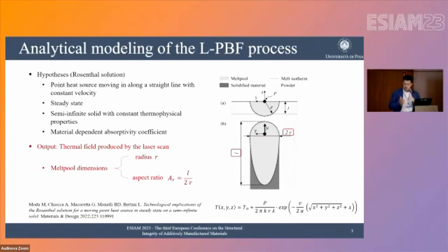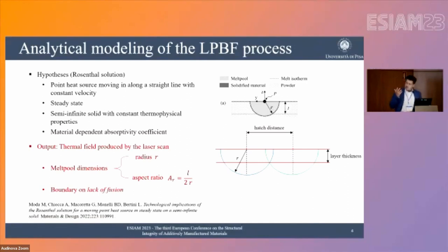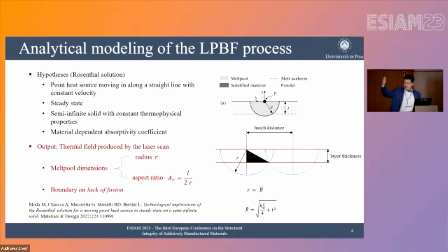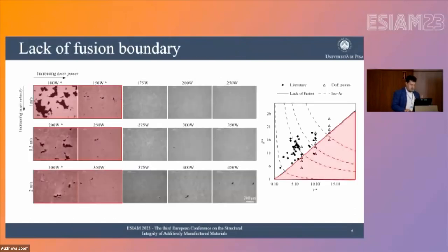Another outcome of this model is that we can define a boundary on the lack of fusion phenomena by obtaining the minimum radius of the melt pool through a simple geometric construction based on the minimum overlap required to avoid lack of fusion defects, given the layer thickness employed. This allows us to define a first limit on lack of fusion, which we experimentally validated through a series of process parameters and specimens.